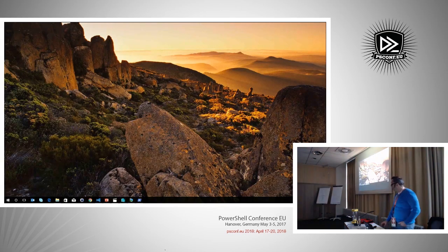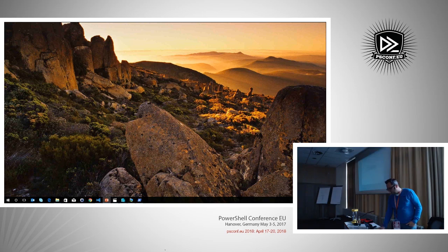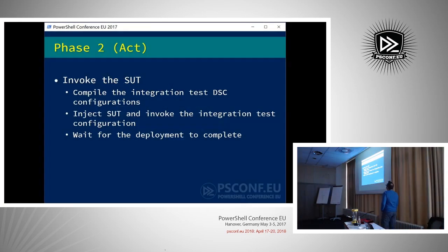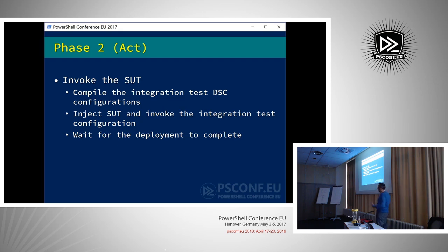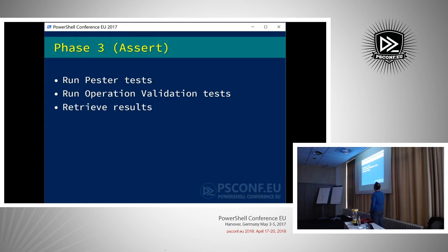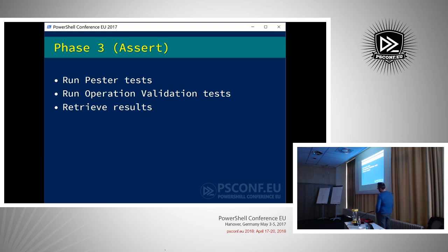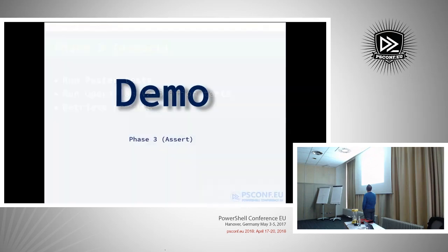Phase two was when we actually deployed the Active Directory configuration - we then need to wait for that Active Directory deployment to finish, whether deploying one domain or two domains: a parent domain and a child domain. You might have an integration test with two domain controllers in each, and you could wait until all nodes are converged. That is the Act phase within our integration tests. The last phase is to actually run the tests themselves - did the system behave the way we expected? We connect to the remote sessions and invoke Pester and OVF to get our test results back.